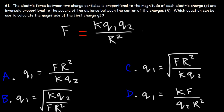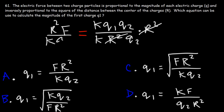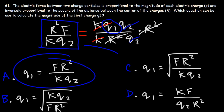I would recommend multiplying both sides by R squared — on the right side, these will cancel. Next, divide both sides by K and Q2, so K will cancel and Q2 will cancel. All we have left on the right side is Q1. So Q1 equals F times R squared divided by K and divided by Q2, which means A is the right answer choice.